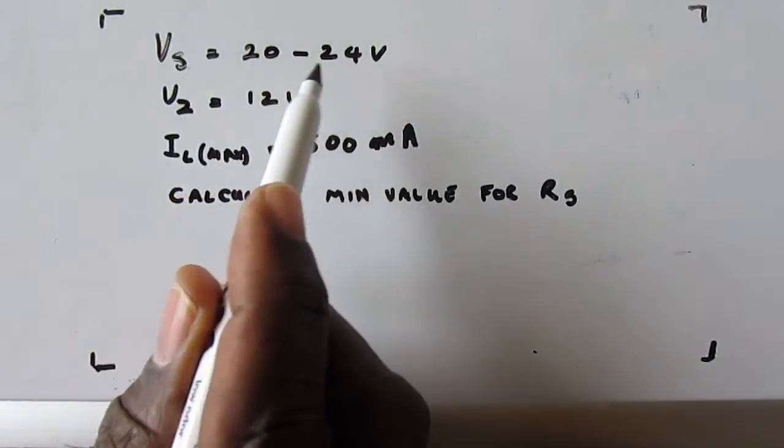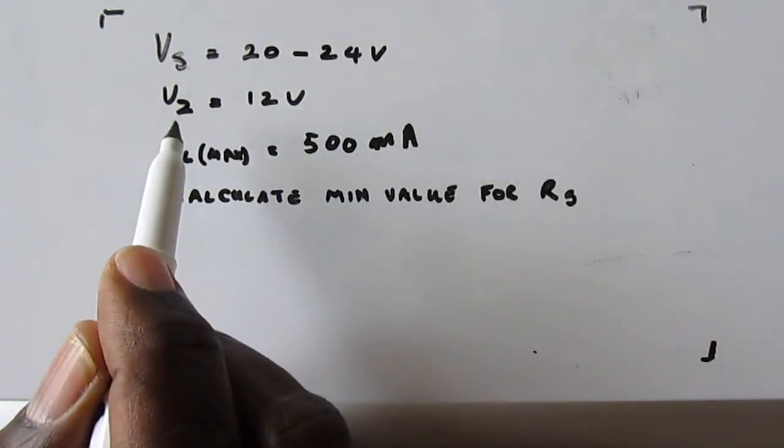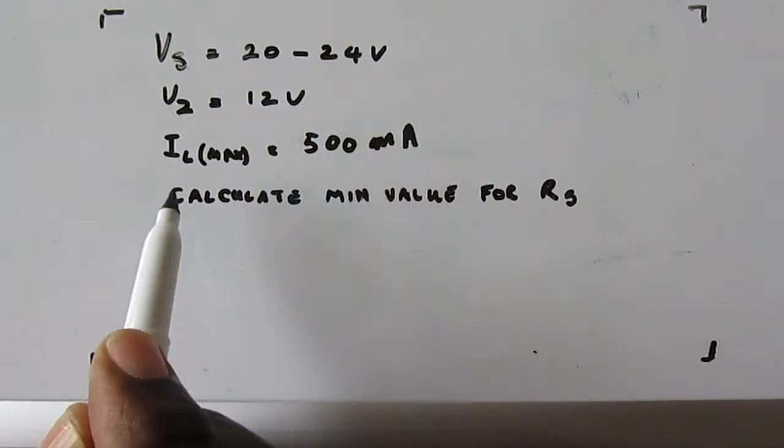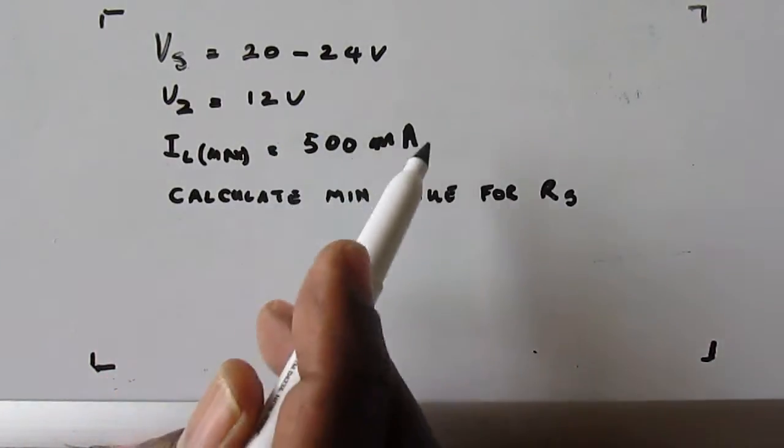VS, 20 to 24 volts. VZ, 12 volts. IL maximum, 500 milliamps.